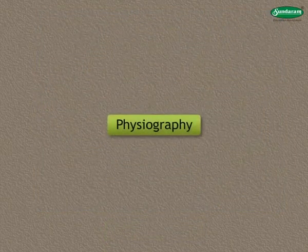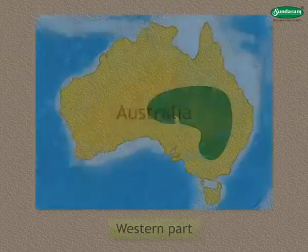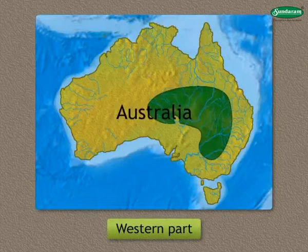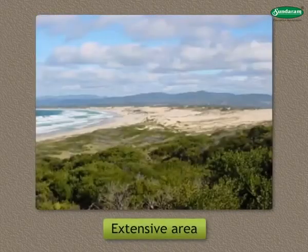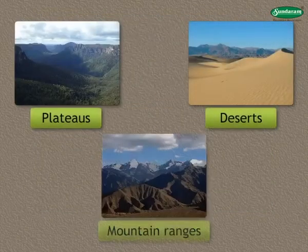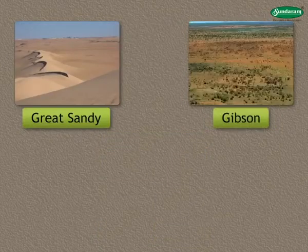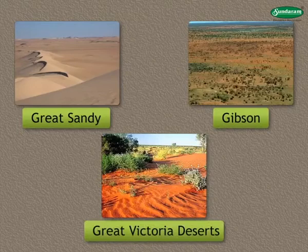Now, let us proceed with the physiography using a map. The western part of the continent is a plateau region. It is an extensive area and it includes different plateaus, deserts and mountain ranges. The Great Sandy, Gibson and Great Victoria deserts occupy a large part of this region.